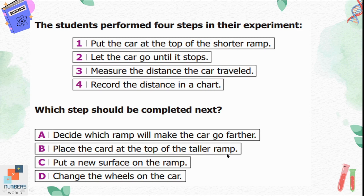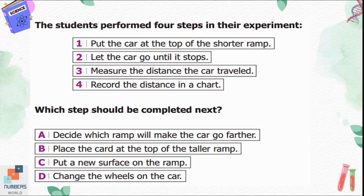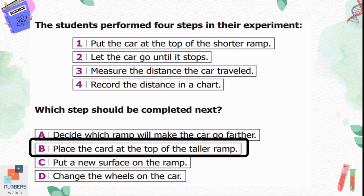The options are: A, decide which ramp will make the car go farther; B, place the car at the top of the taller ramp; C, put a new surface on the ramp; D, change the wheels on the car. First they put the car on the short ramp and measured the distance. As the next step, they should put the car on the taller ramp and measure the distance, then determine the effect of ramp height. So option B is correct.